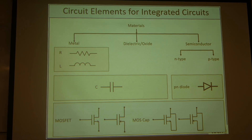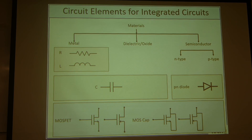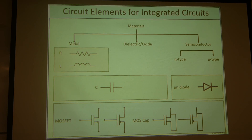If you integrate metal and dielectric together — dielectric has a conductivity lower than approximately 10⁻⁸ Siemens per centimeter — if we integrate those two, we can have a capacitor structure where we can store some charge.